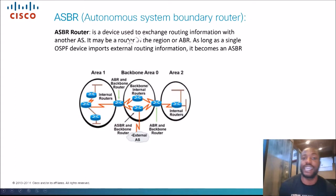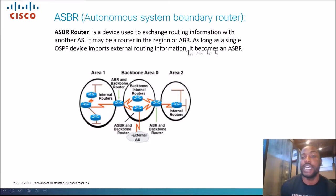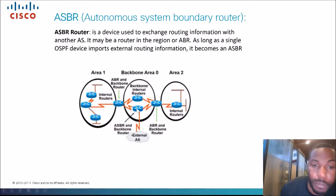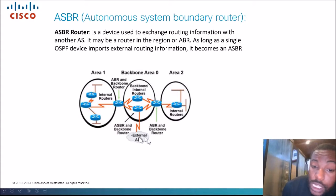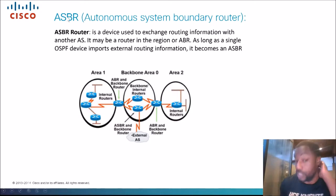The ASBR, or Autonomous System Boundary Router, is a device used to exchange routing information with another AS. It may be a router in the region or an ABR. As long as a single OSPF device imports external routing information, it becomes an ASBR. So this router is in Area 0, making him a Backbone router, but he's also on the border of an External Autonomous System — that could be a BGP AS or EIGRP. That's what an ASBR is: it connects you to another routing protocol, another AS.